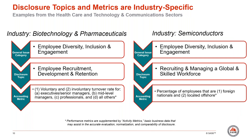Let's look at another example. In this example, we are again looking at two different industries and sectors: the biotechnology and pharmaceuticals industry, which is in the healthcare sector, and the semiconductors industry, which is in the technology and communication sector. Again, both industries share the same human capital general issue category, employee diversity, inclusion, and engagement. However, the disclosure topics are different to address the industry specific financially material impacts of this issue. For the biotechnology and pharmaceutical industry, a key issue is employee recruitment, development, and retention due to the high need for a highly skilled and technical workforce.